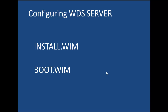The install.wim can also be an image file from your reference computer. For example, you might have a reference computer on which you have already installed the operating system and all the other applications that you want your client to use. What you would then do is make a copy of that reference computer. That copy is a WIM file — a Windows image file — and it is called the install.wim file.